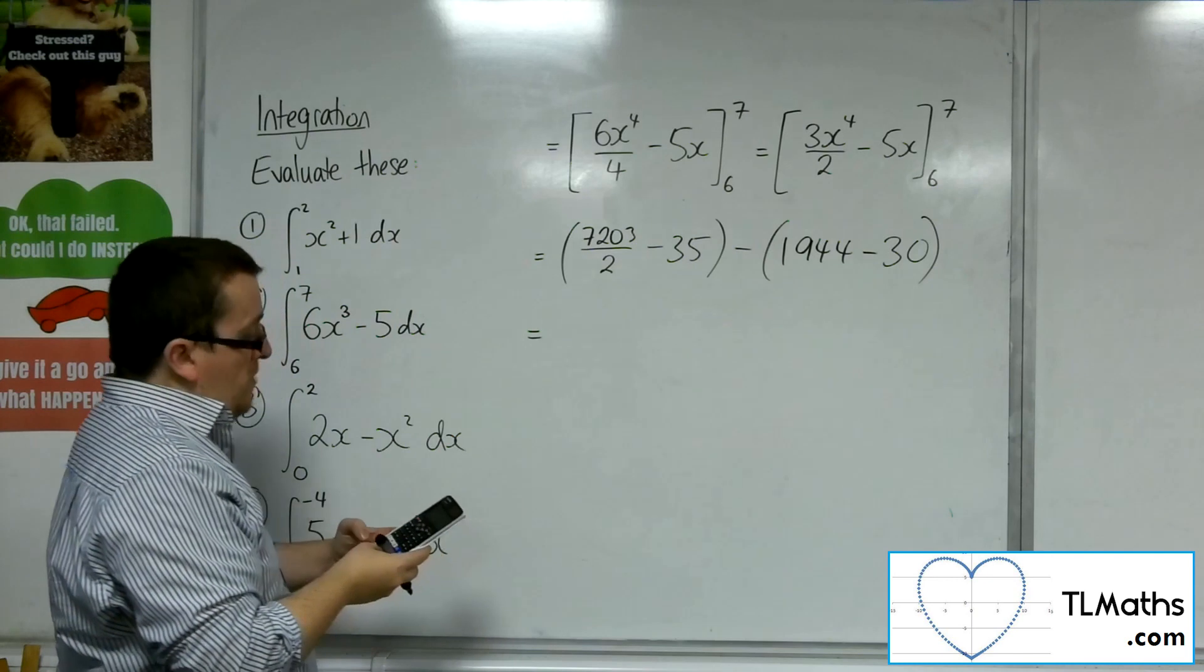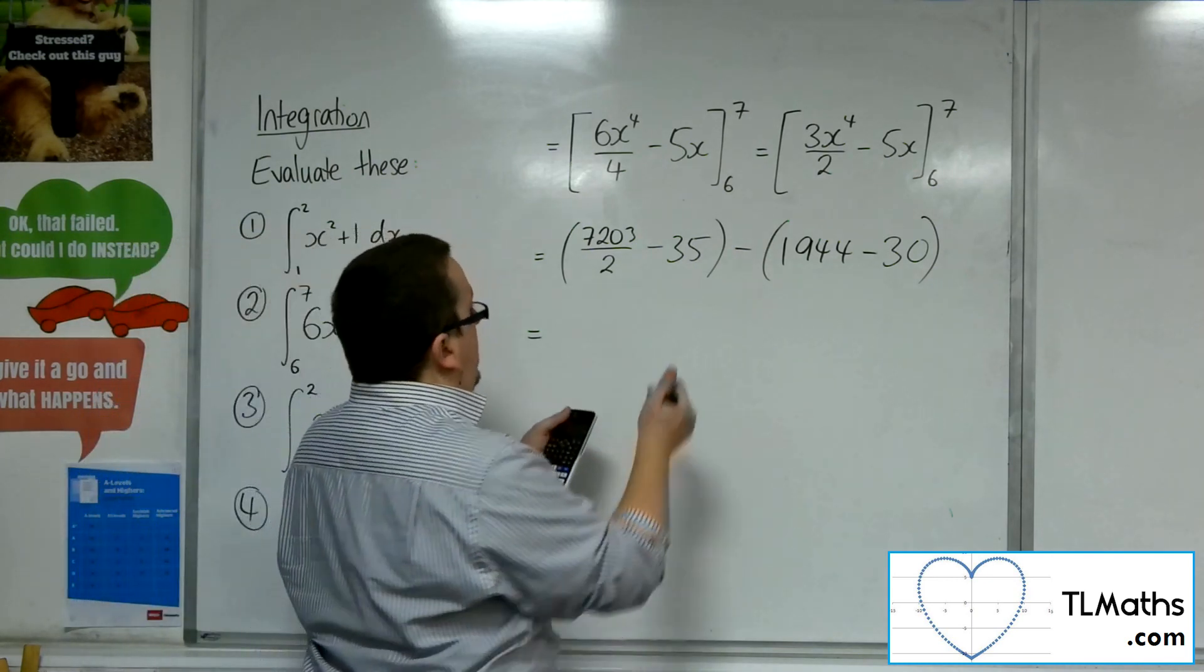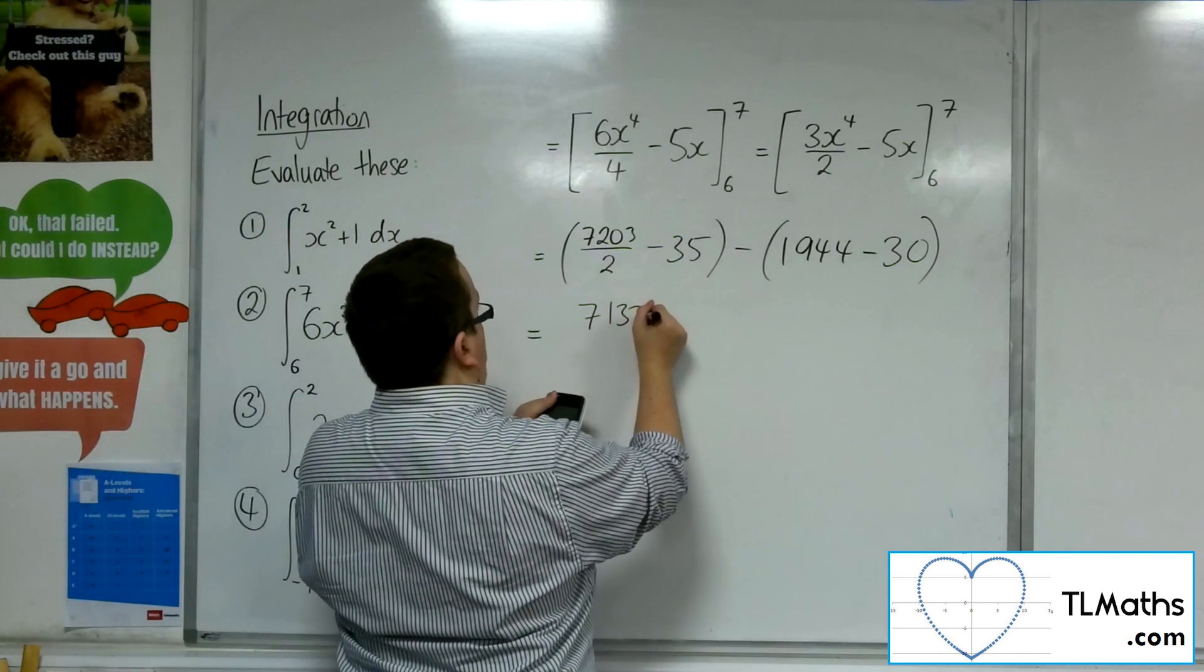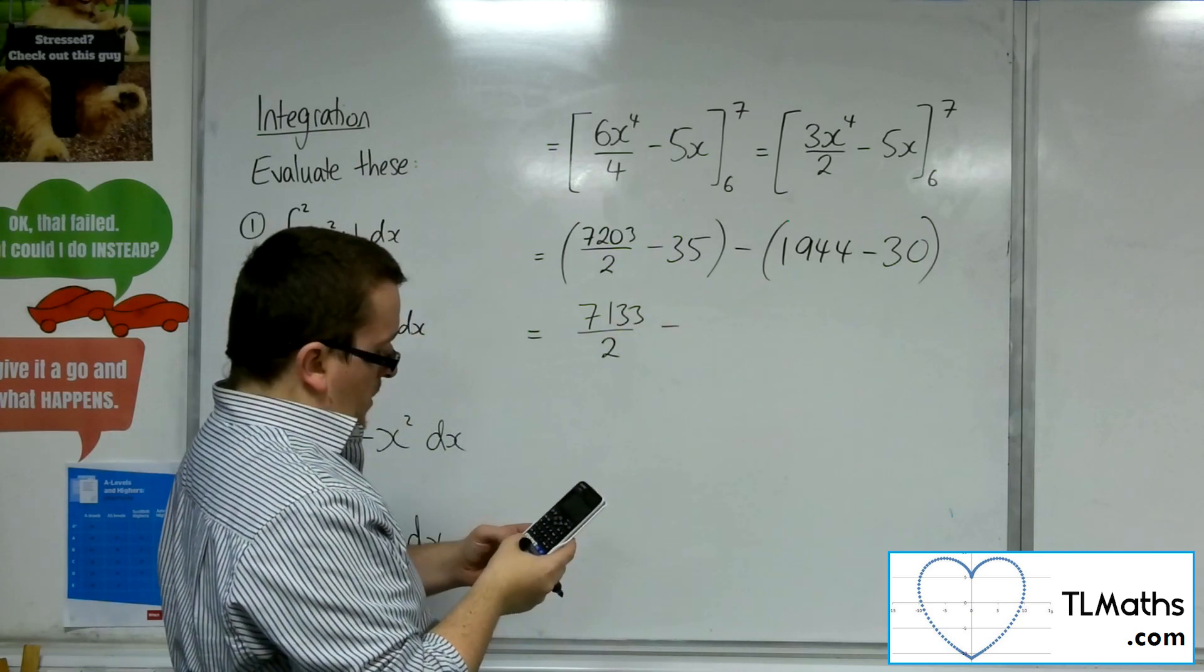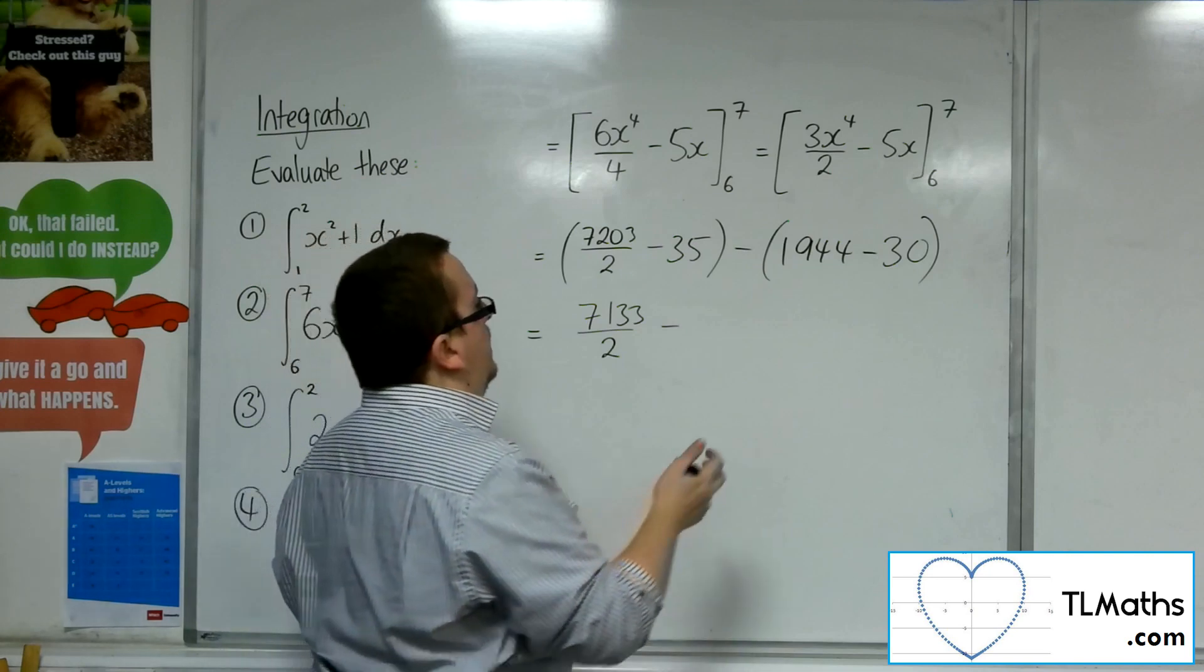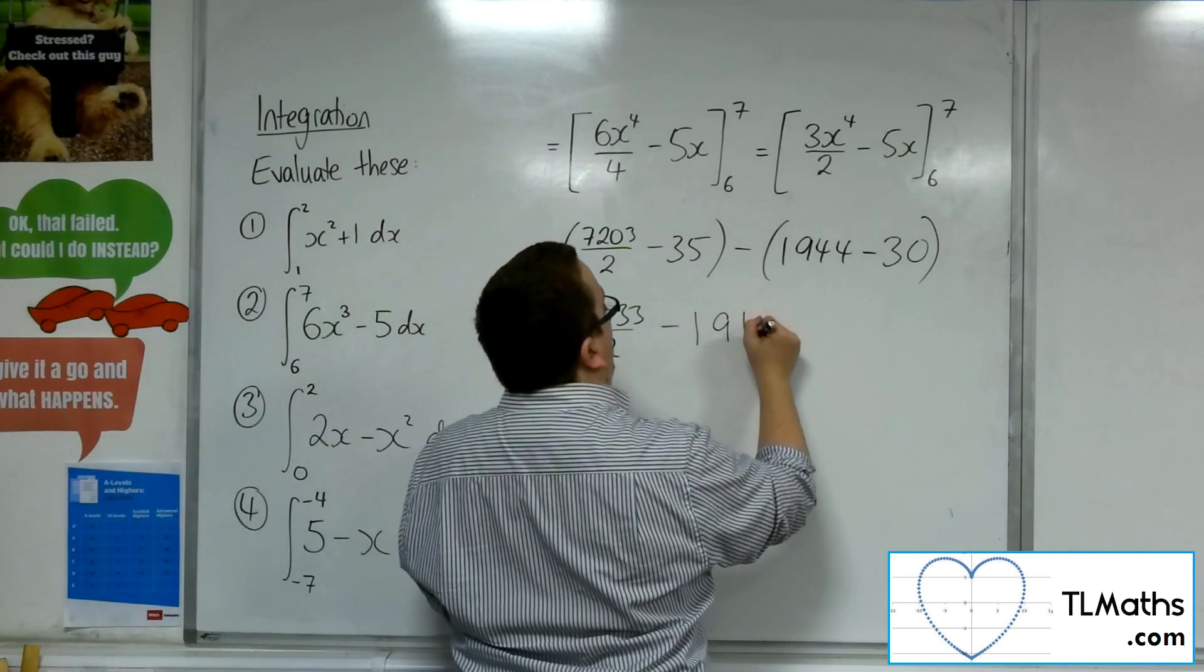So the first bracket is 7,133 over 2. The second bracket, 1,944 take away 30, is 1,914.